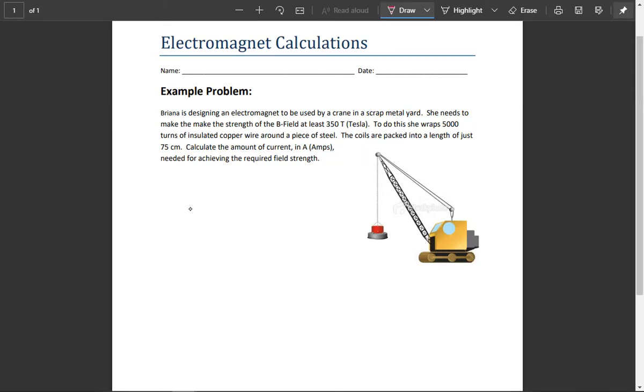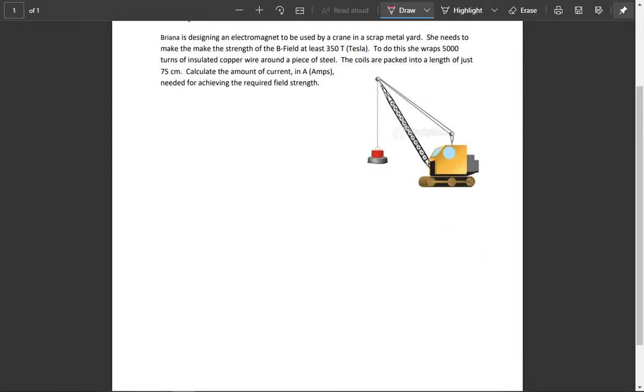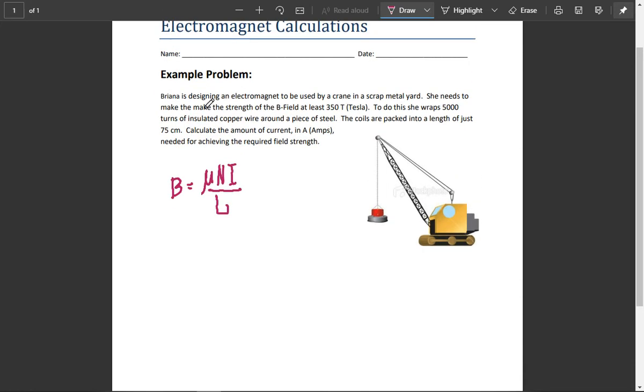Okay, so what we're looking at here is just a quick example of how to use the electromagnet equation. We write down the equation first before we get started, just so we know we're going to be using it. In this case, B equals μ N I over L.